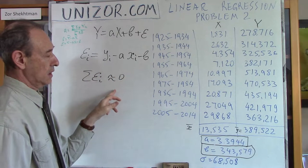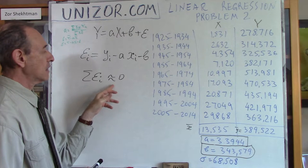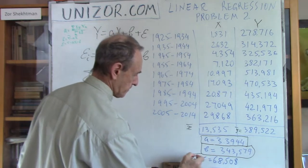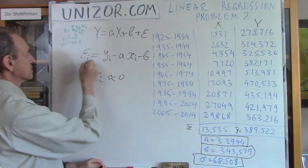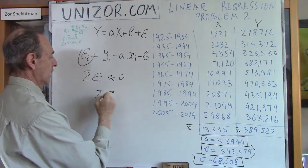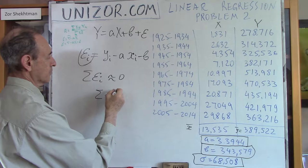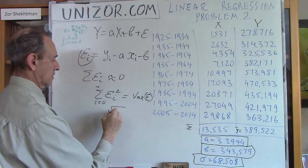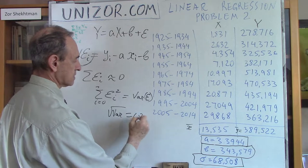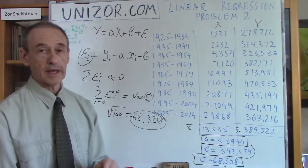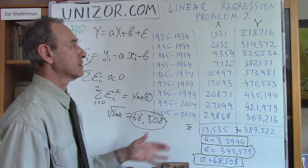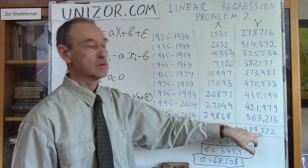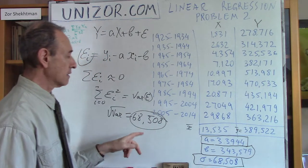Now I know A and B. And now I can actually have the values for epsilon i is equal to yi minus axi. This minus 3 point whatever times this and minus 343,000 whatever. If my calculations are correct, then the sum of all epsilon i should be approximately equal to zero, because that's how we calculated from the very beginning. And it is.